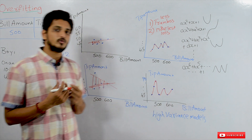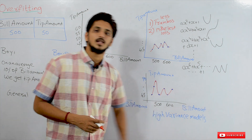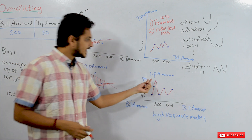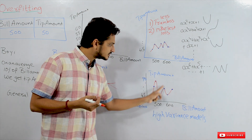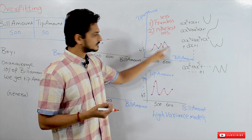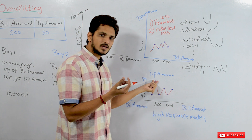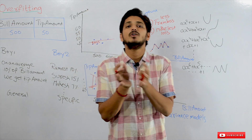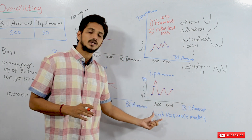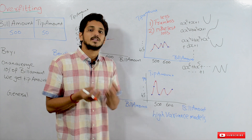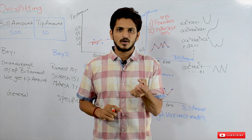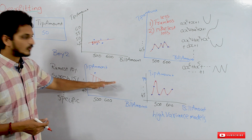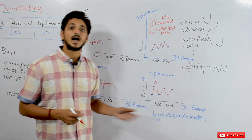One more important point: overfitted models are also called high variance models. High variance means that for a small change in data, our model will change a lot. By adding just one outlier point, the overfitted model changed significantly, while the linear model showed only a small change. Because the model varied so much, we call it a high variance model.